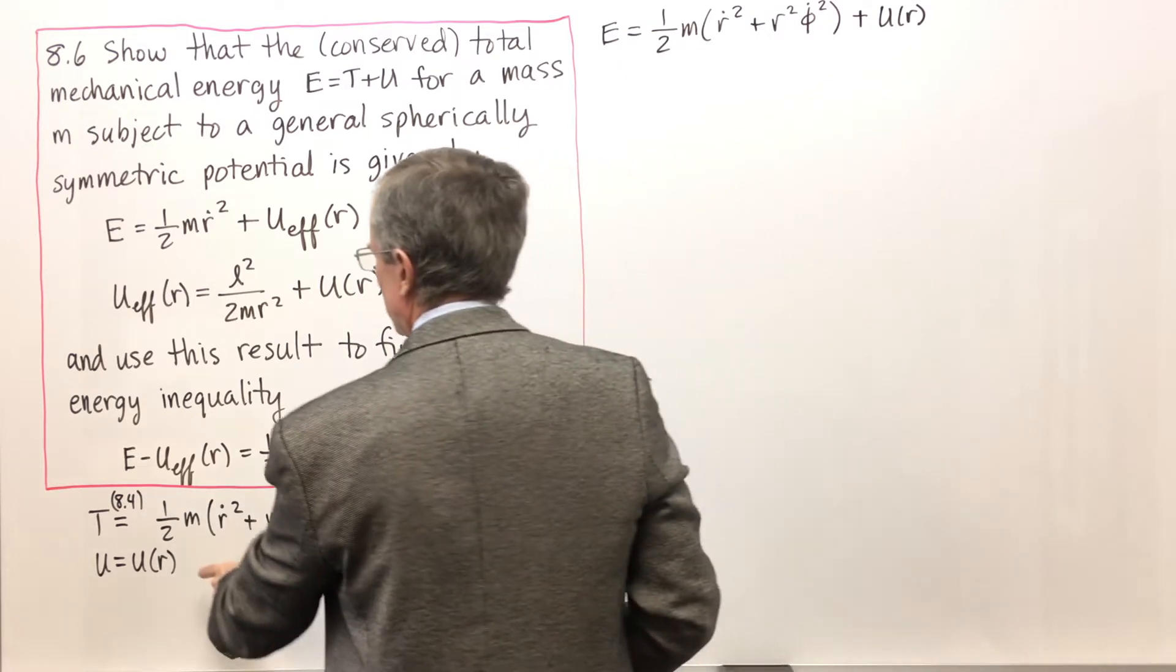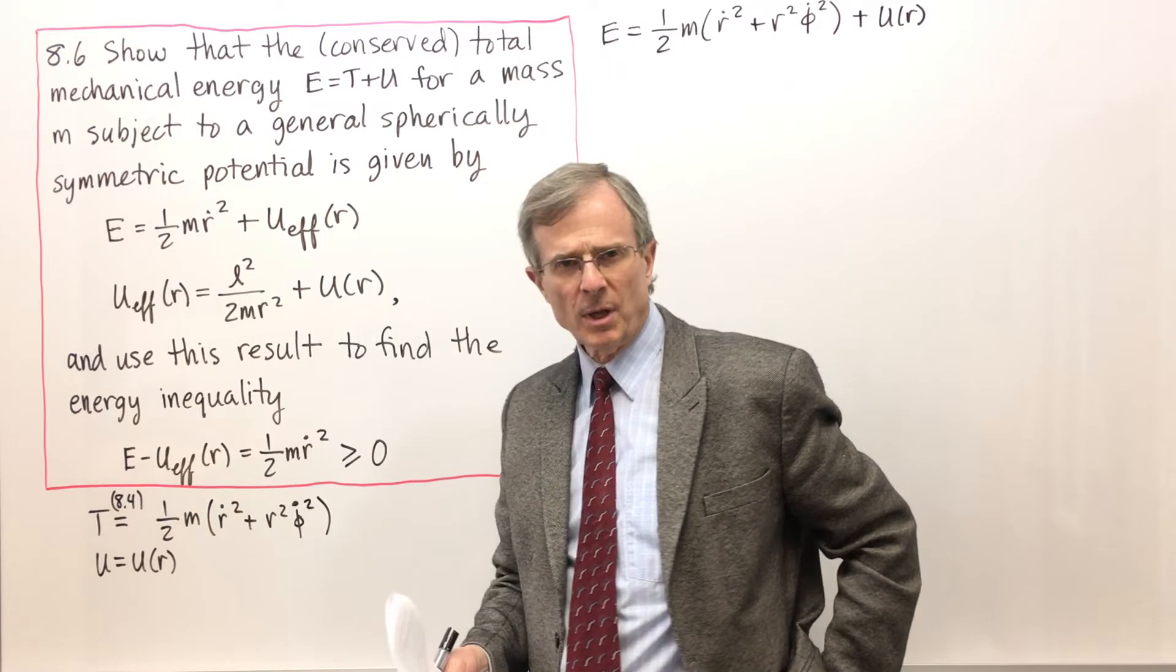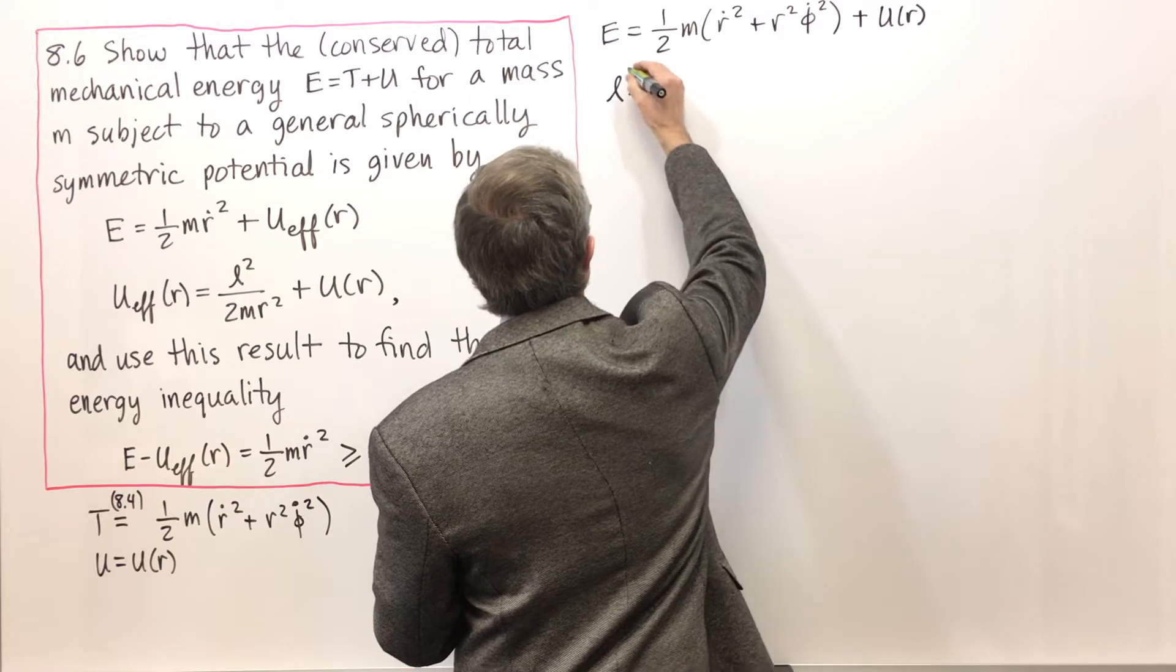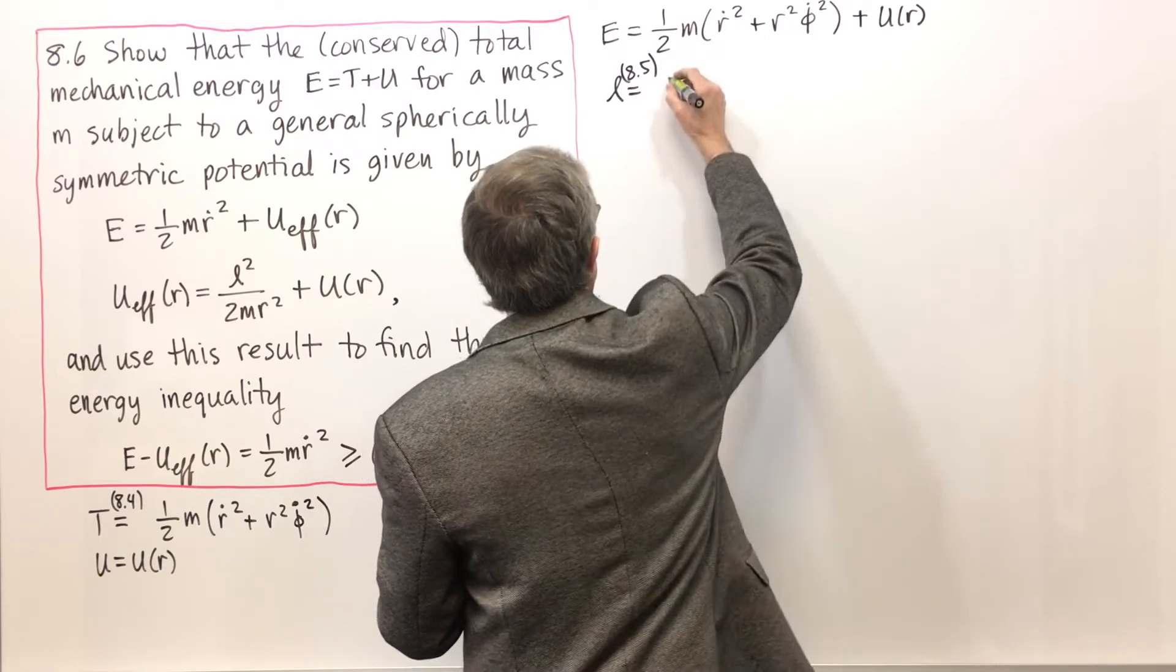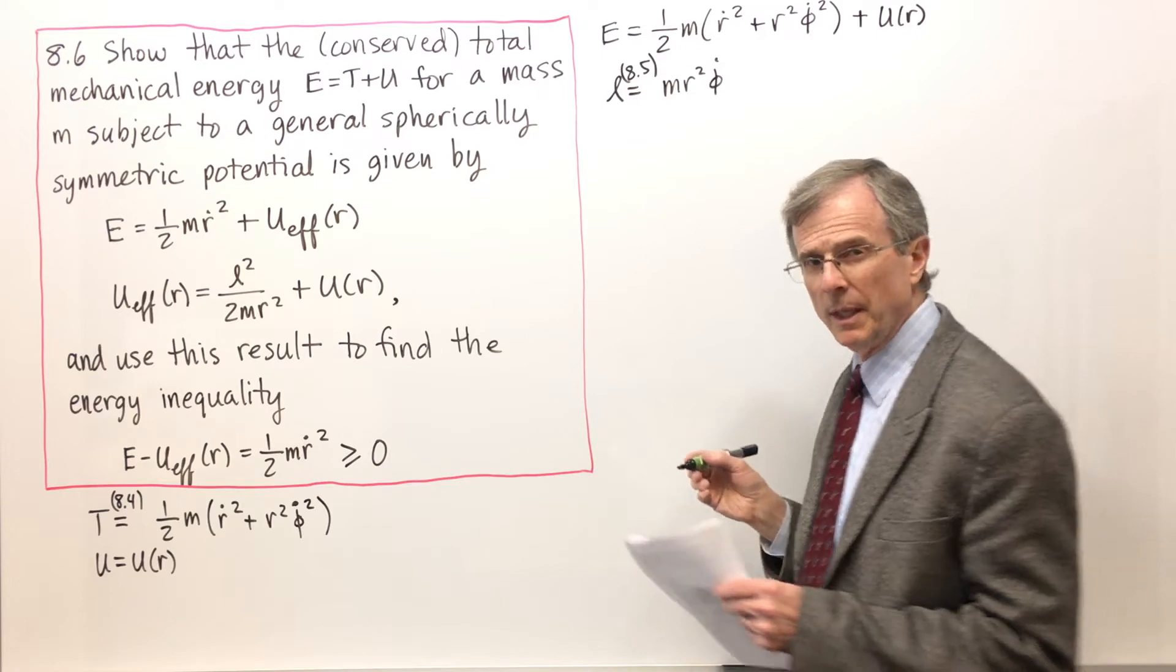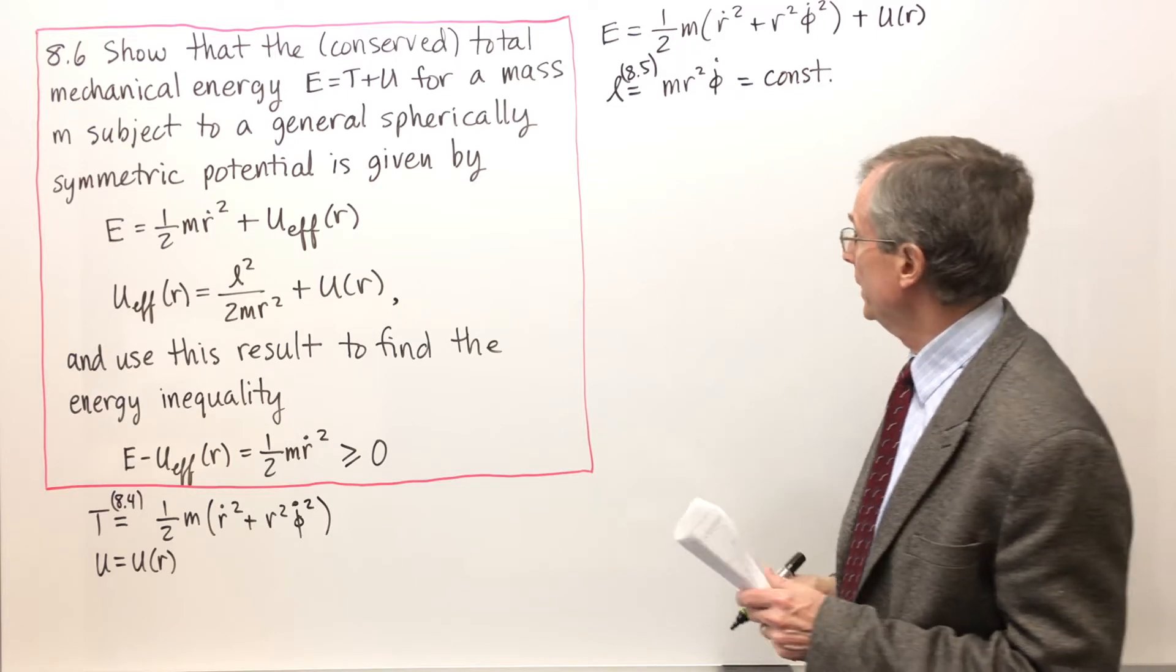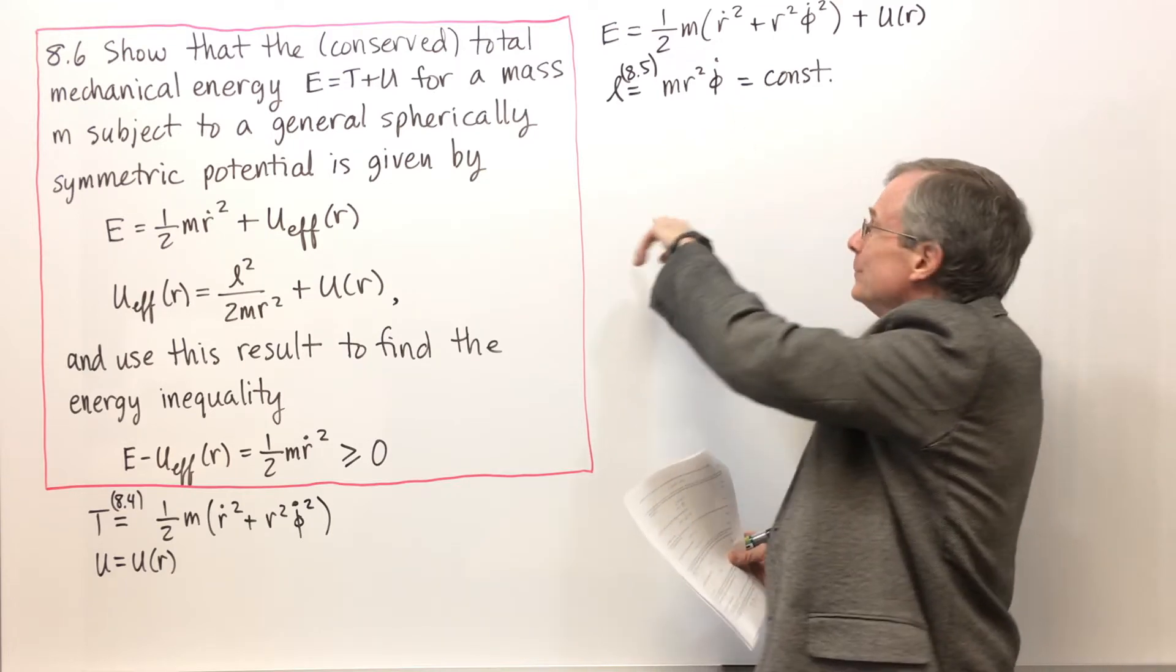And we want to try and write it this way, using this effective potential. This effective potential involves the angular momentum L that we looked at in concept 8.5. We showed that L, the angular momentum, is a constant. And that is the total angular momentum. So what we're going to do now is we're going to solve this one for phi dot.